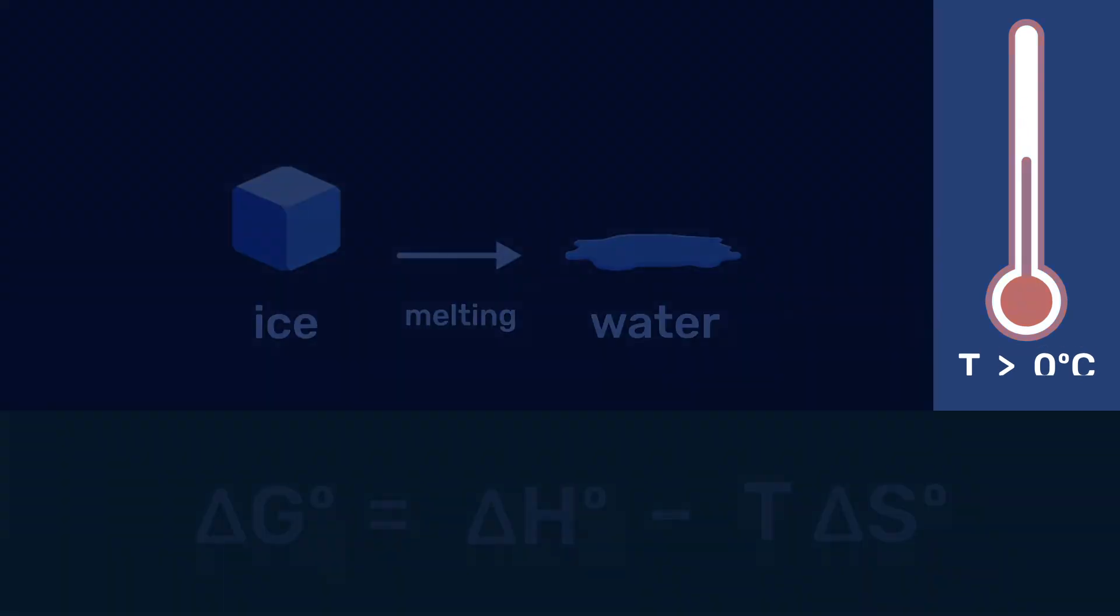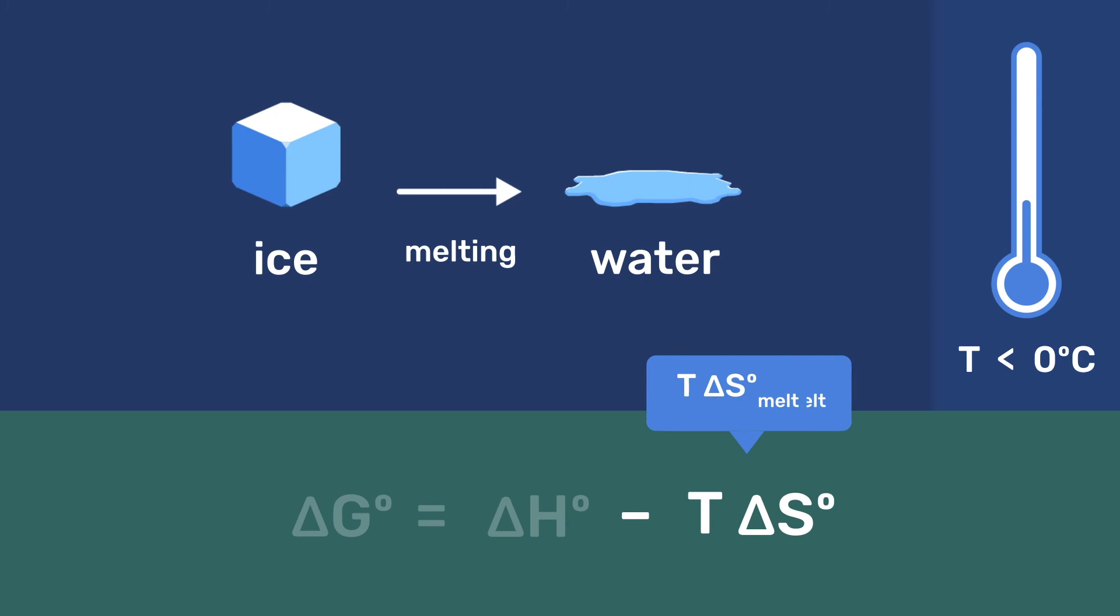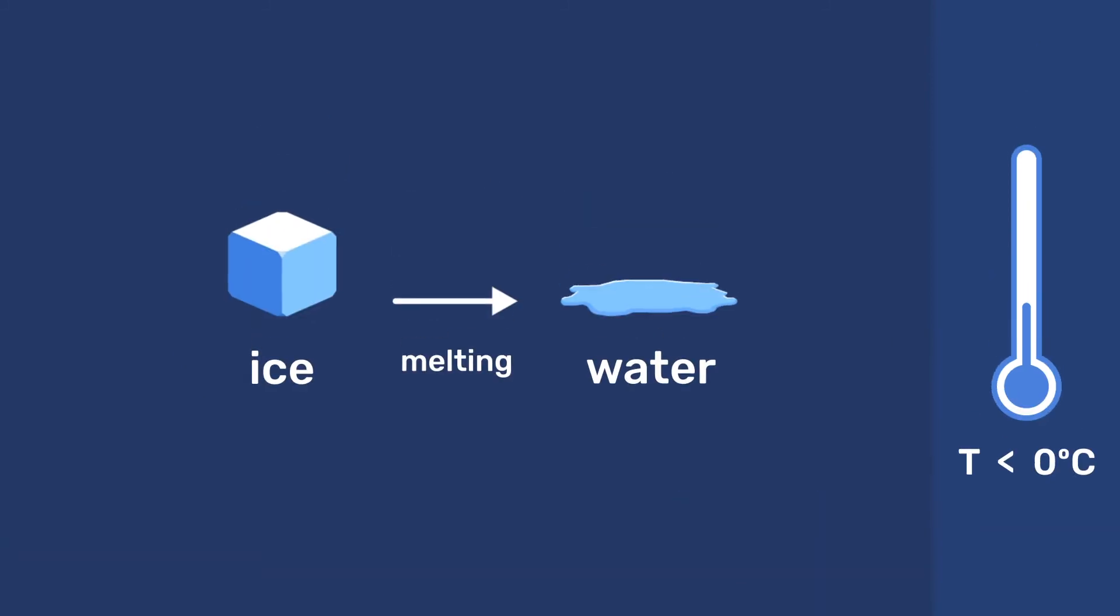Below 0 degree C, the reaction is still endothermic, but this time the term minus TΔS is not large enough to make ΔG negative. Therefore, below 0 degree C, the melting of ice is non-spontaneous as we very well know.